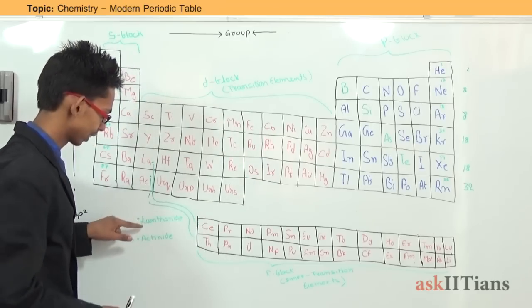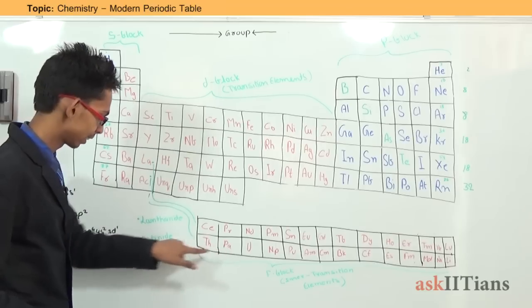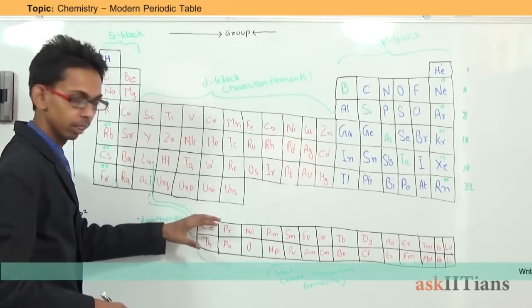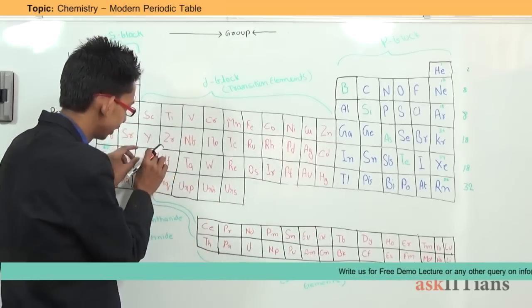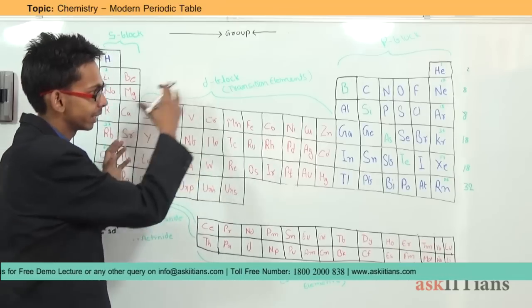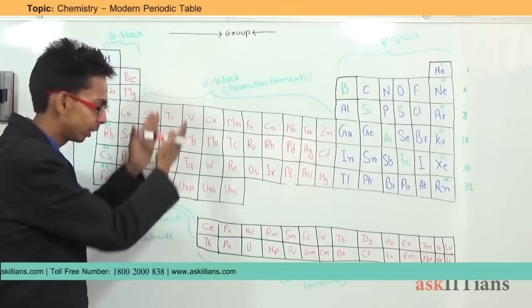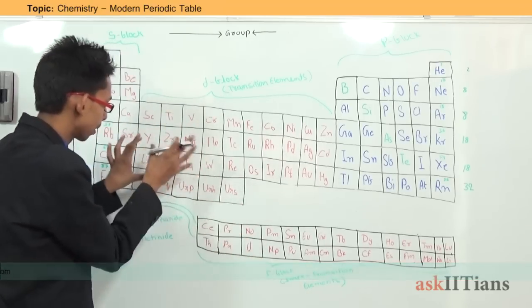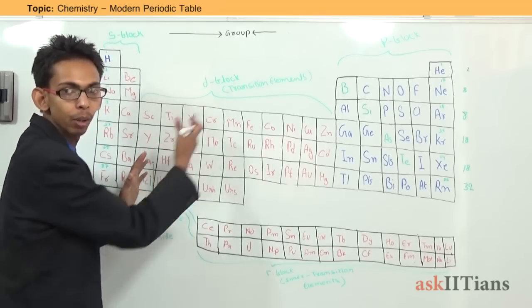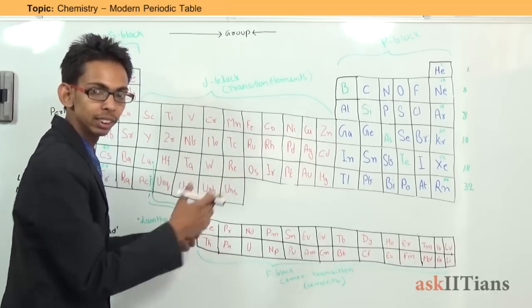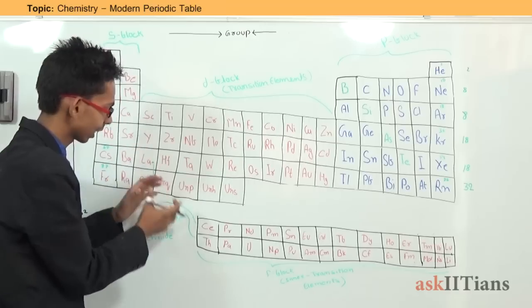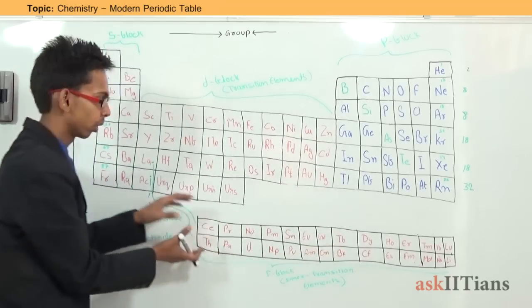The F block elements are present outside the main periodic table. The first row is known as lanthanoids and the second as actinoids. These actually belong to their respective positions within the table, but if arranged there, they would disturb the periodicity and the similarity of properties within groups. Therefore, for continuation of periodic properties, they are represented outside the table and are known as inner-transition elements.